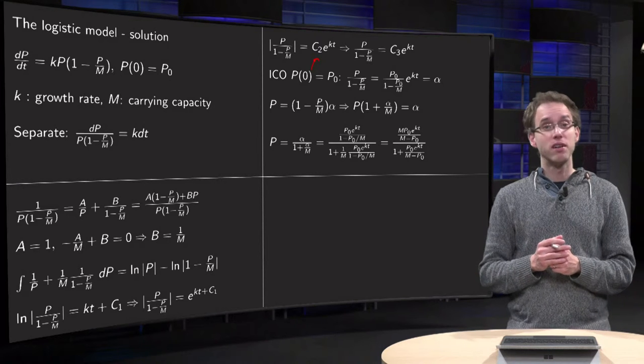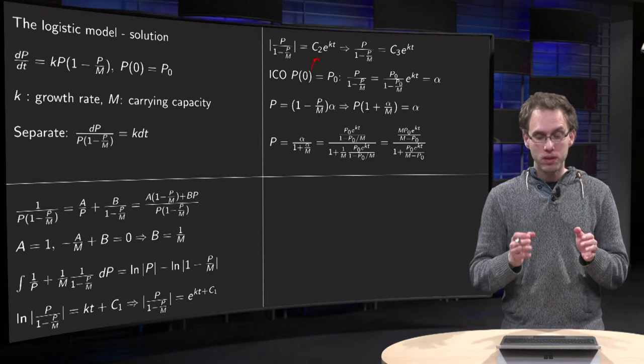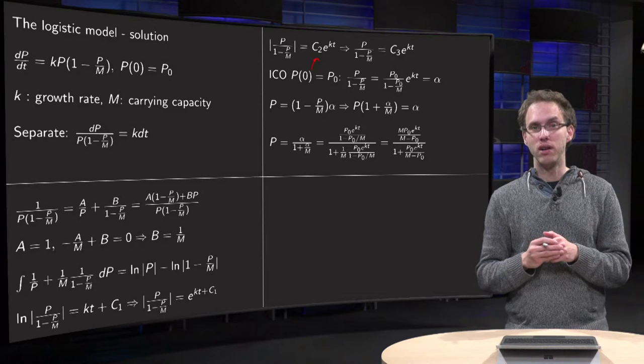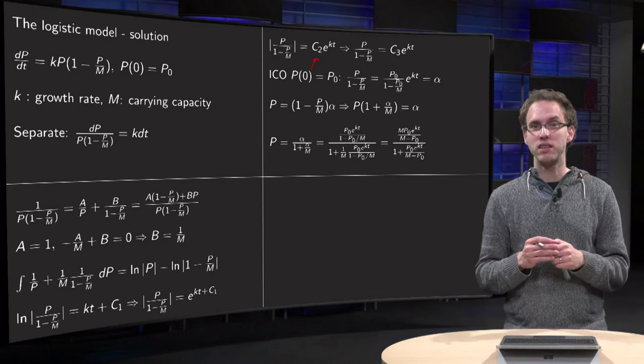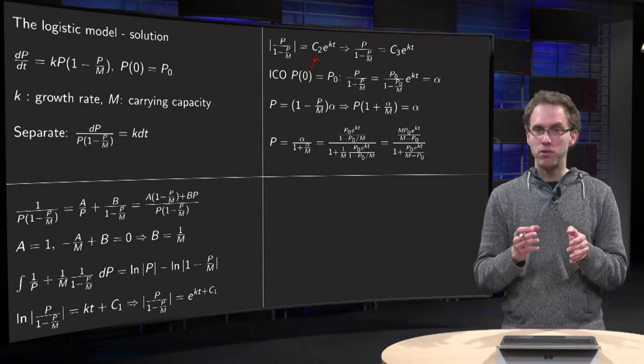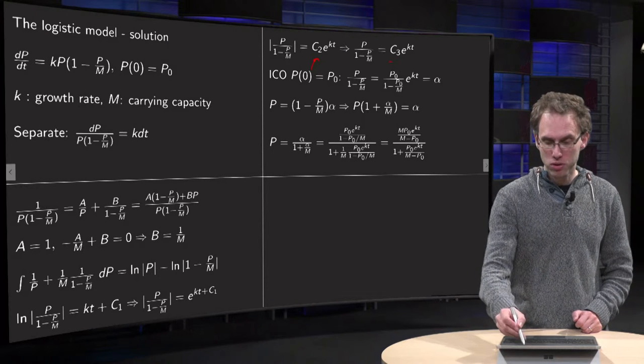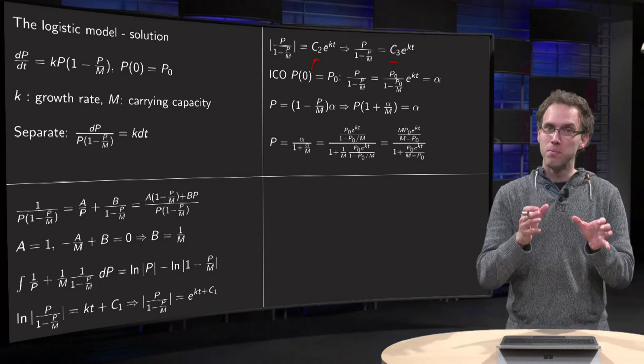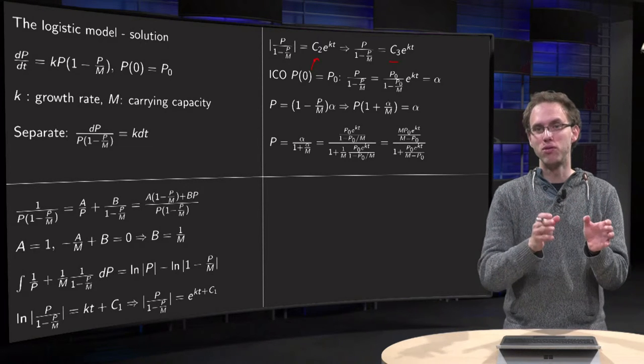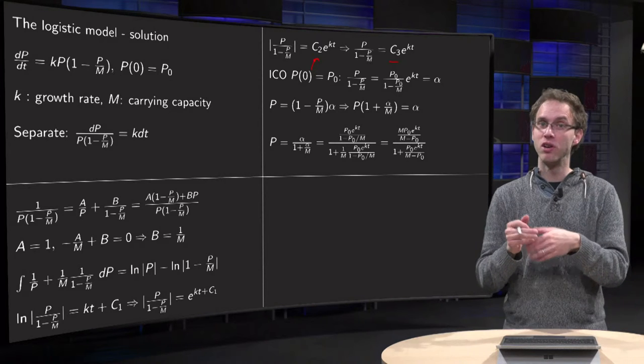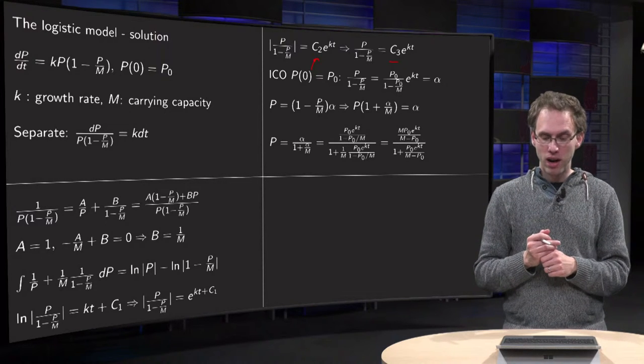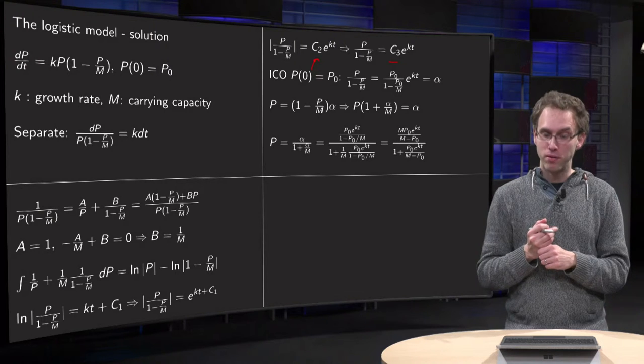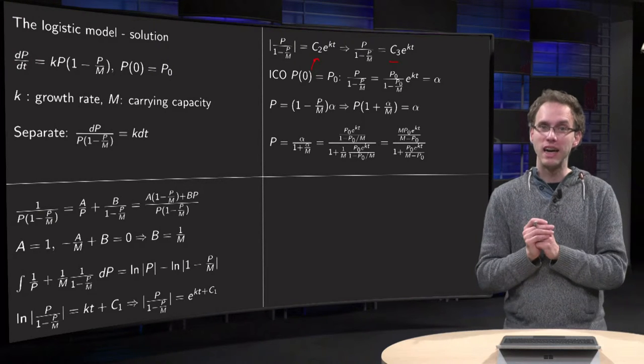And then how do we get rid of the absolute value? Now the expression on the left hand side is either positive or negative. If it's positive you just pick c3 equal to c2, and if it would be negative you pick c3 equals minus c2. So you basically put the sign of the absolute value also in your arbitrary constant, which was arbitrary anyway. So you have P over (1 minus P over M) equals some constant times e to the power of kt.